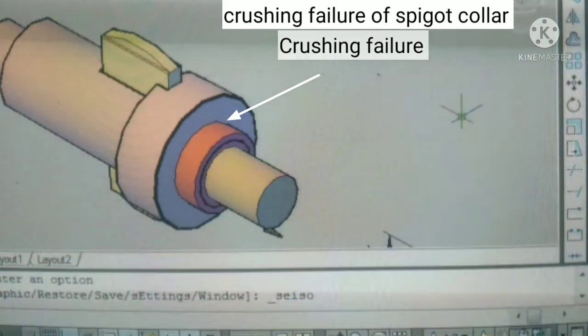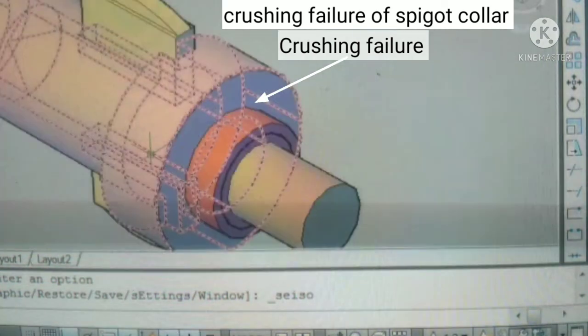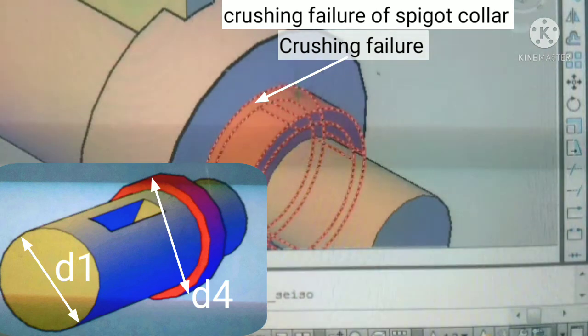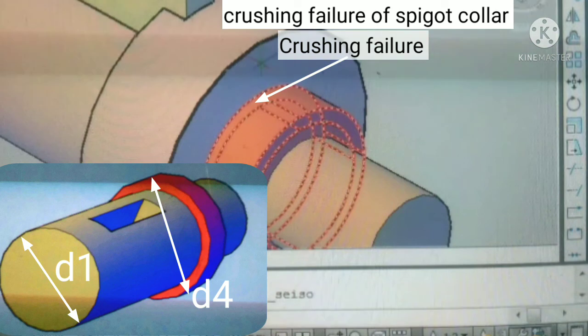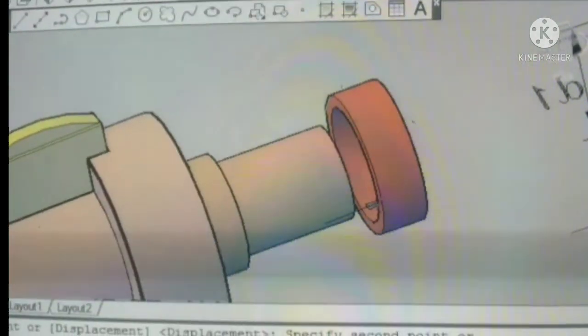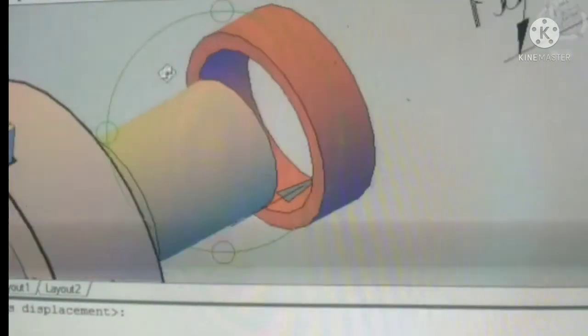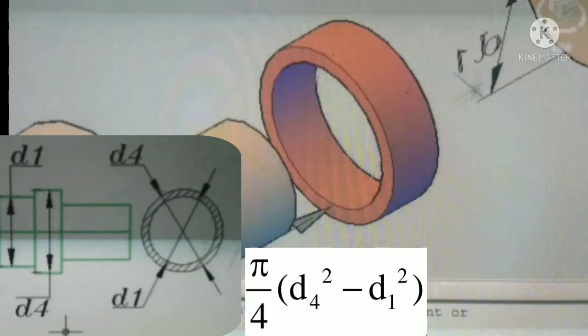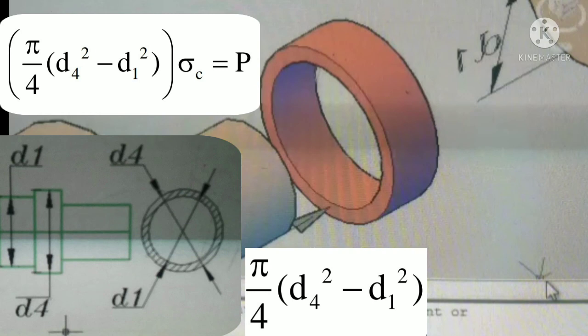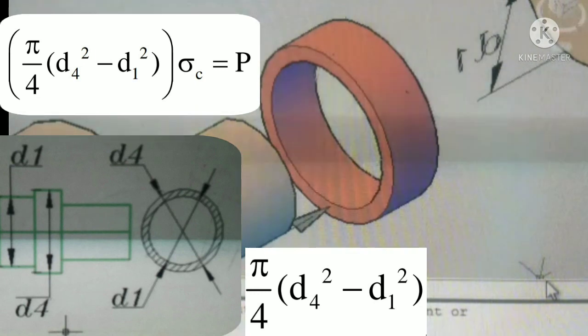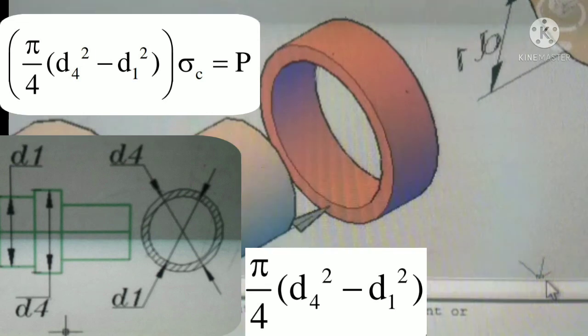For tensile load P there will be a crushing failure between the two collars of socket and spigot. Here D4 is the outer diameter and D1 is the inner diameter of spigot collar. The crushing area is (pi/4) D4² minus (pi/4) D1². So we write (pi/4)(D4² − D1²) × sigma C = P. From this equation we calculate D4, the outer diameter of spigot collar.